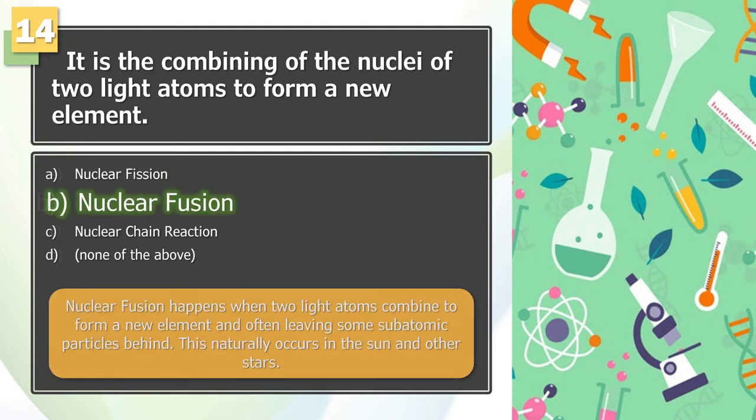The answer is B. Nuclear fusion happens when two light atoms combine to form a new element and often leave some subatomic particles behind. This naturally occurs in the sun and other stars.